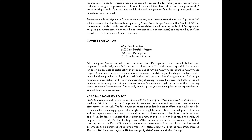Academic honesty policy: Students must comply with the tenants of the PVCC honor system at all times. PVCC takes academic dishonesty very seriously. Honor offenses subject to disciplinary action include cheating, plagiarism, knowingly furnishing false information, and forgery or alteration of college documents. A written summary of violations will be placed in the student's official college record, though it may be removed after one year with no further offenses. Any work determined to be plagiarized will receive a grade of F. Note: copying or drawing from photographs counts as plagiarism unless specifically asked to draw from a master drawing.